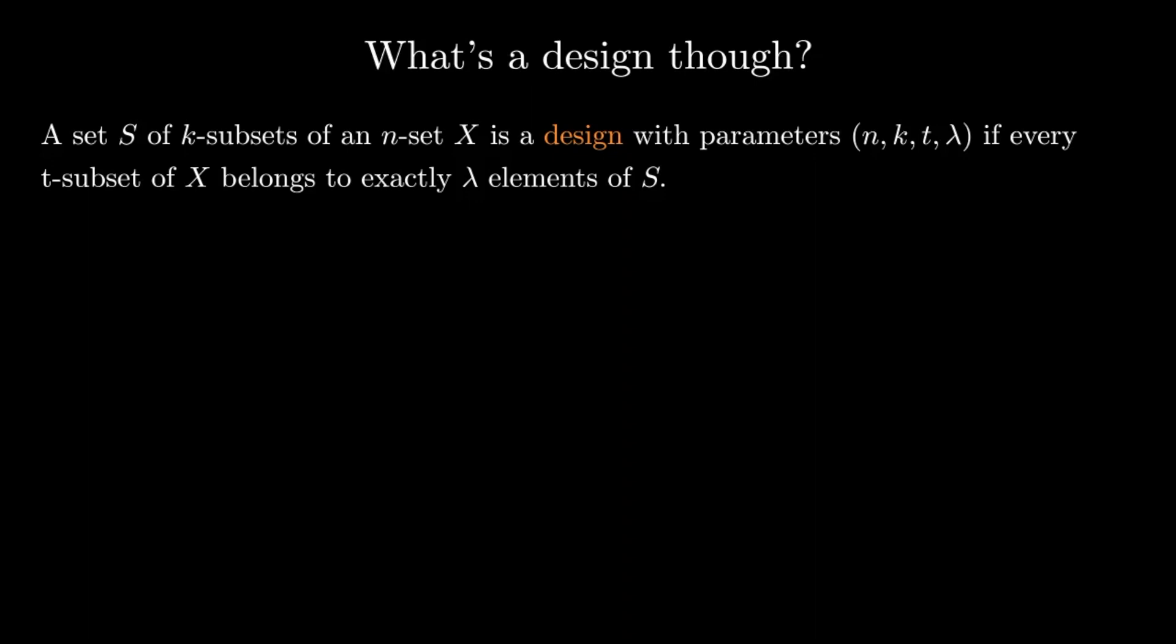So the major difference between Steiner systems and designs is that designs have one more parameter, namely lambda. However, if lambda is equal to 1, we get a Steiner system. So Steiner systems are just a particular case of what we more generally call designs.